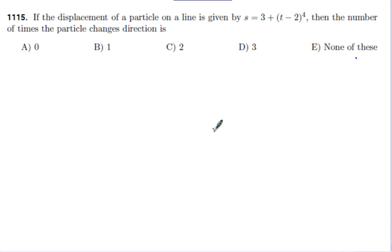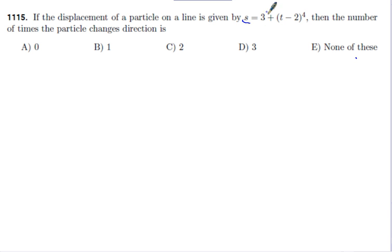We're given a displacement — a position function — and we want to know when the particle changes direction. We first have to answer: what do we need to know to tell the direction of the particle? Position only tells us where it is, not where it's going. What tells us where the particle is going is the first derivative — the velocity function. The word 'direction' with a position function clues me in that I'm going to need to know something about the first derivative.